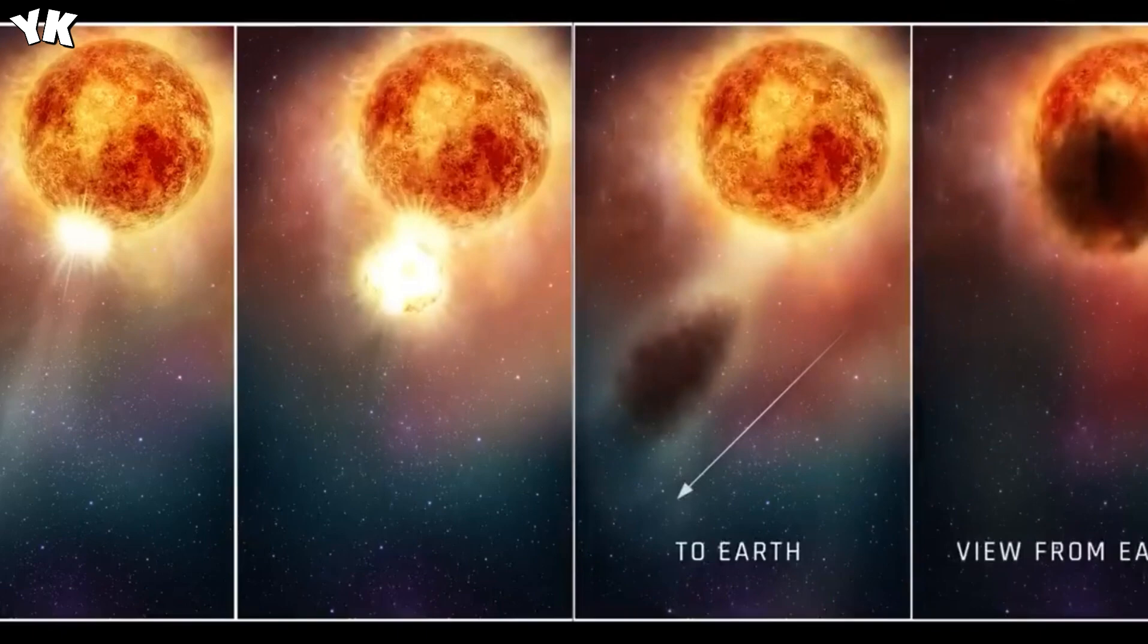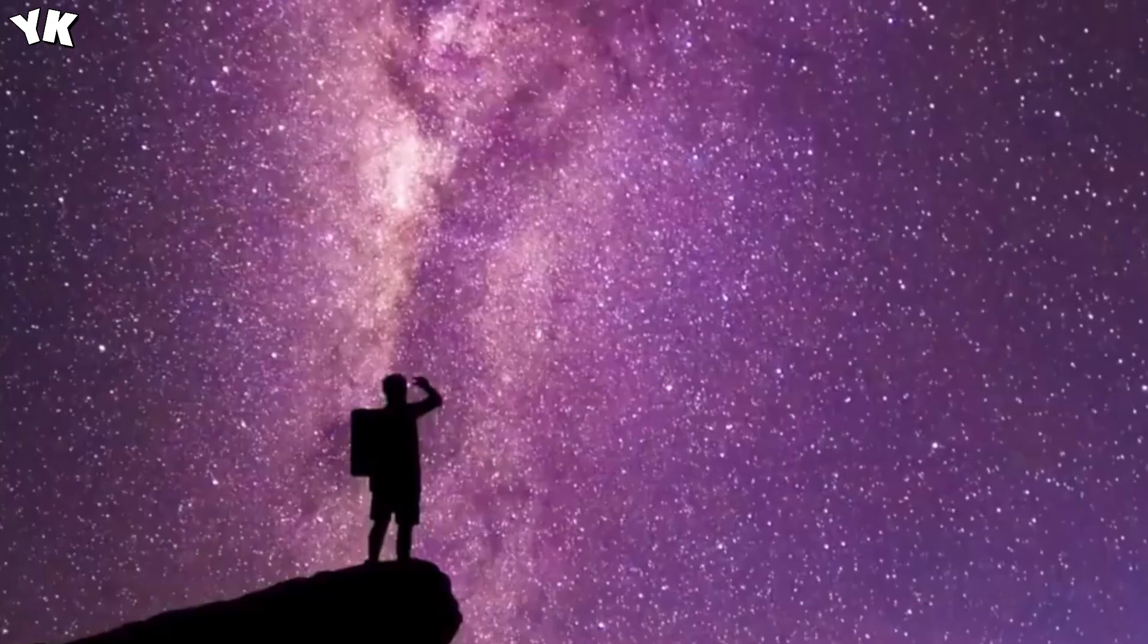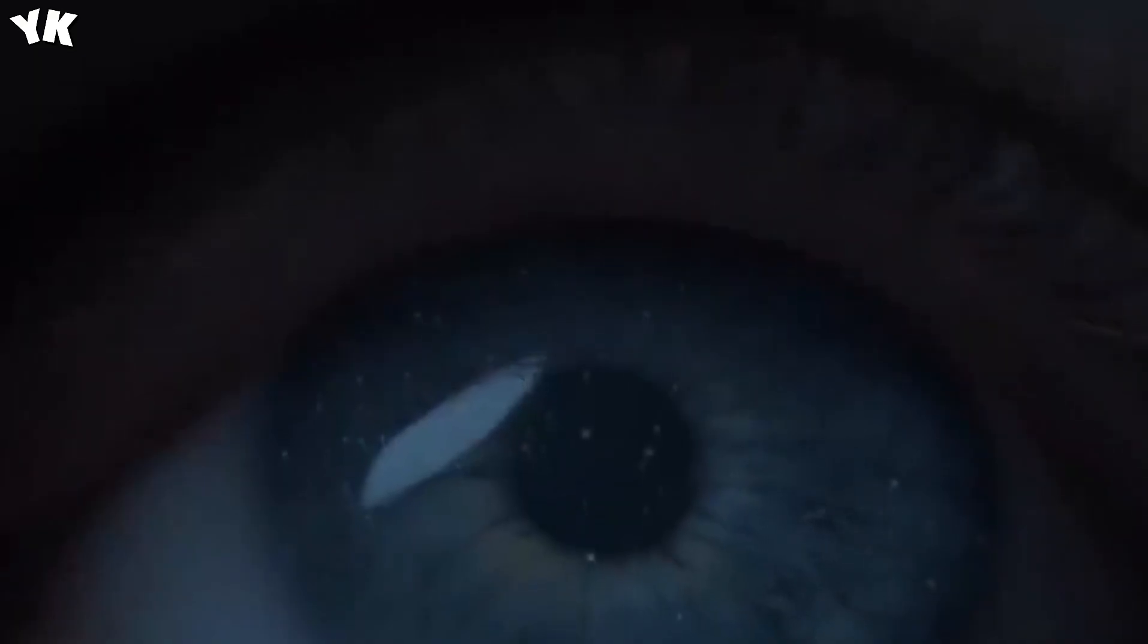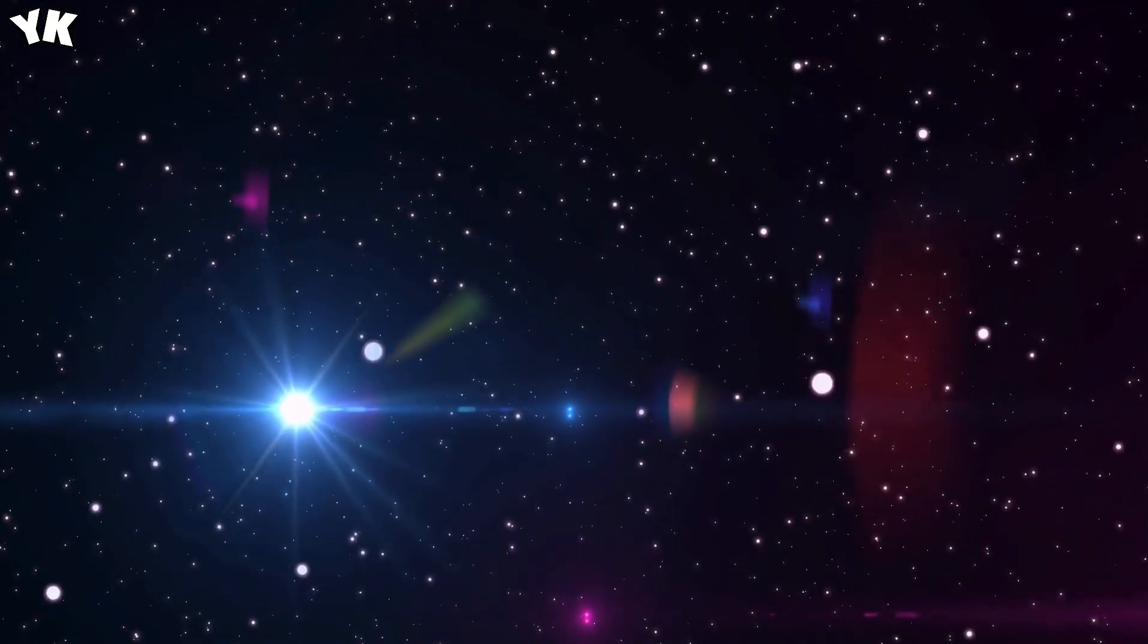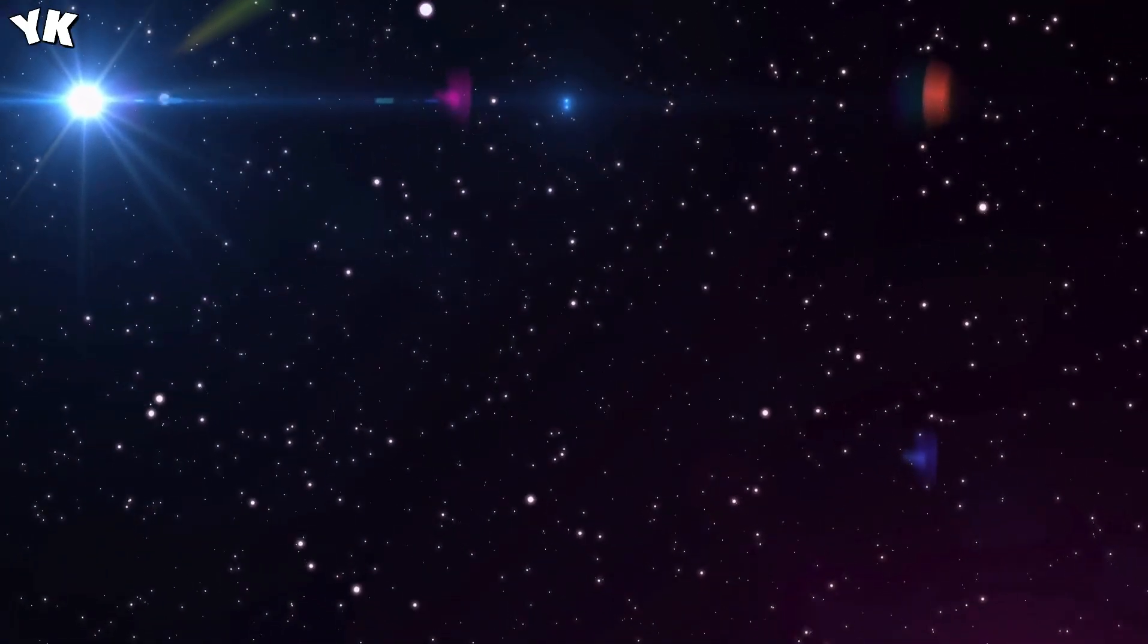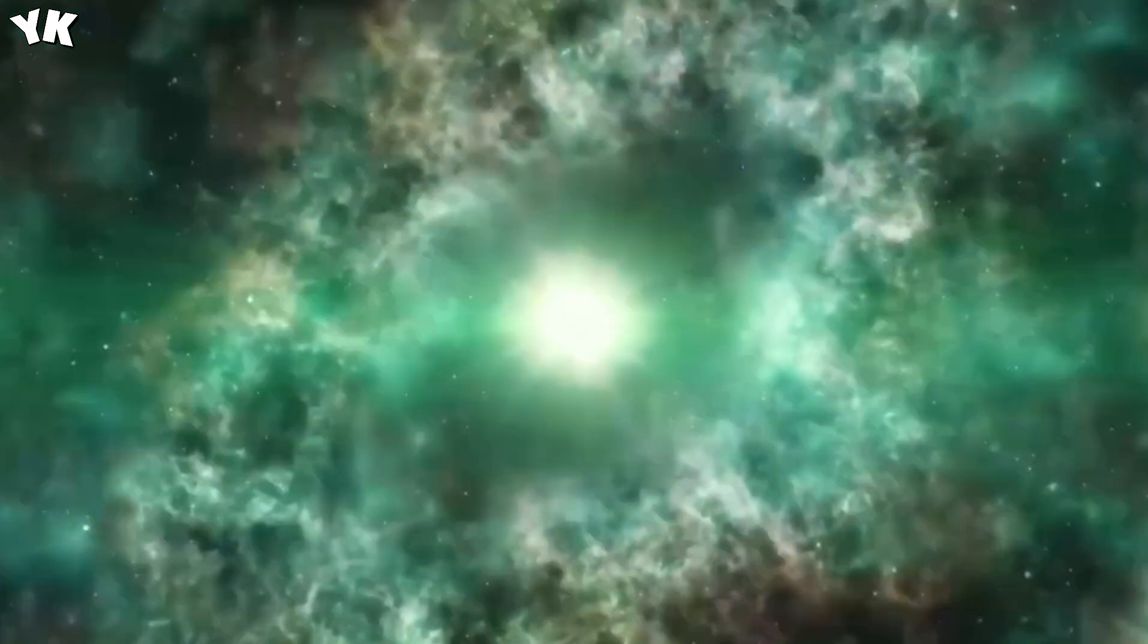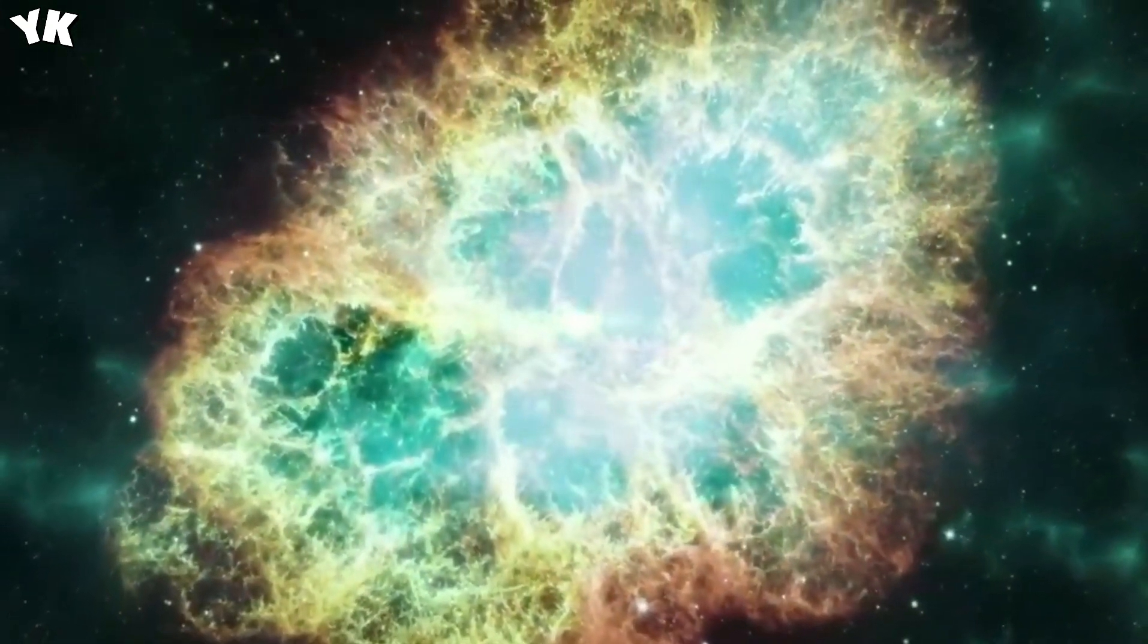Historically, supernovae have been rare observers on Earth. But imagine for a moment a stellar detonation so intense that it rivals the brightness of a full moon, casting shadows on Earth at night and being visible during daylight. The radiation from such an event would charge our atmosphere, potentially impacting satellite operations and possibly even the climate. Betelgeuse, with its unpredictable dimming patterns, suggests it might be gearing up for just such a grand spectacle. Could we be on the verge of witnessing one of the universe's most dramatic events?